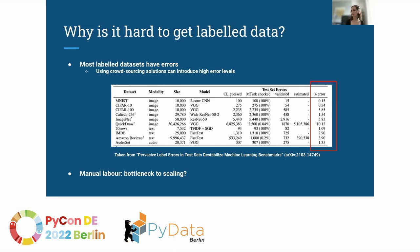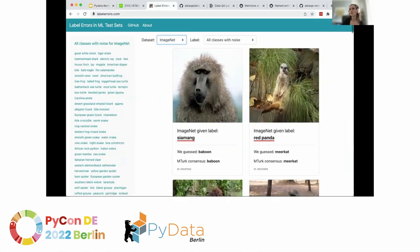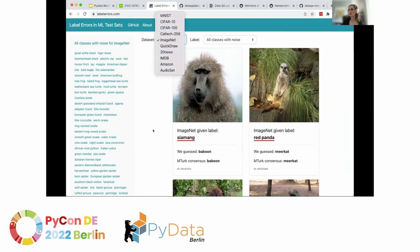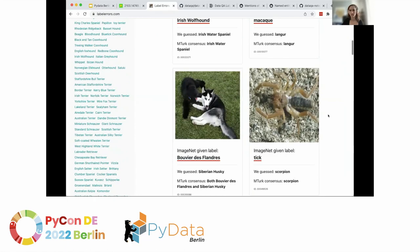There was a study last year — a paper called 'Pervasive Label Errors in Test Sets Destabilize Machine Learning Benchmarks.' They looked at datasets used in famous AI competitions and estimated the level of label error. For example, for ImageNet, they estimated around 6% label error. They even have a website called labelerrors.com where you can inspect different datasets and see examples of the errors you can find.